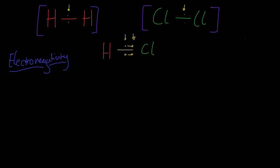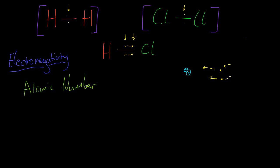Electronegativity is affected by two main factors. The first one is atomic number — the amount of protons in the nucleus. We can illustrate this by thinking about what's actually happening: if we have positive protons and negative electrons in the bond, these electrons are going to be drawn towards the positive charge of the nucleus. And logically, if we have more protons, we have a greater charge and the electrons are going to be more strongly drawn towards the nucleus.